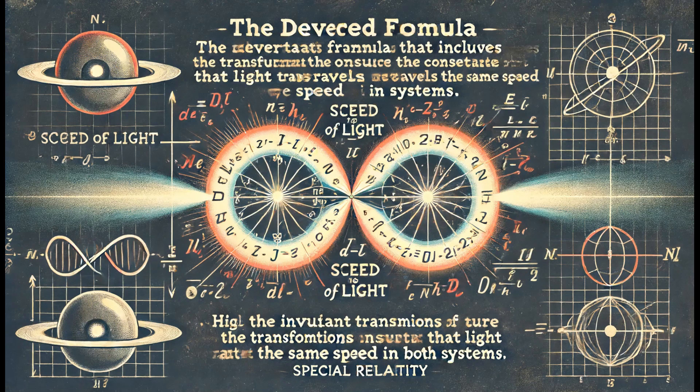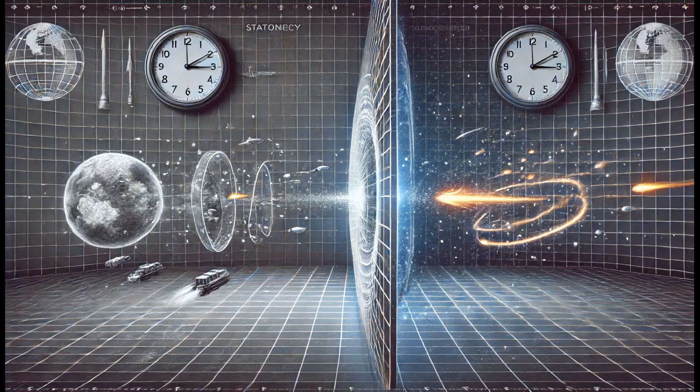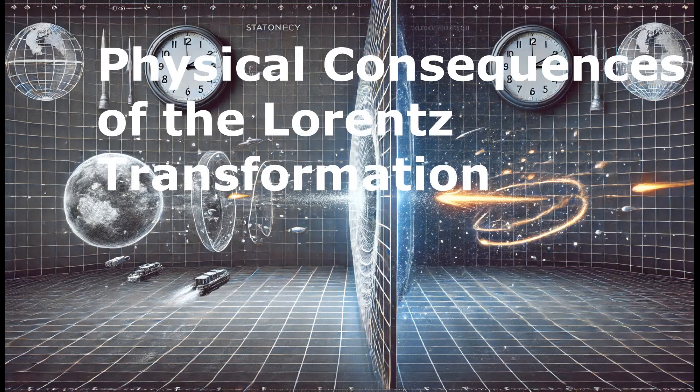Finally, this ensures that the transformations respect the invariant nature of the speed of light, one of the cornerstones of special relativity, thus confirming the consistency and physical significance of the transformations between the two coordinate systems. We will now examine the concept of the relativity of simultaneity, a fundamental principle in the theory of special relativity.